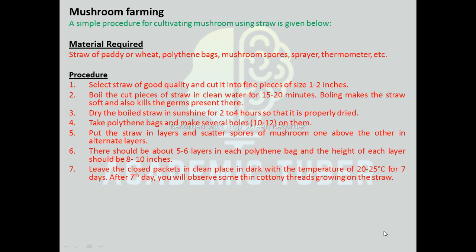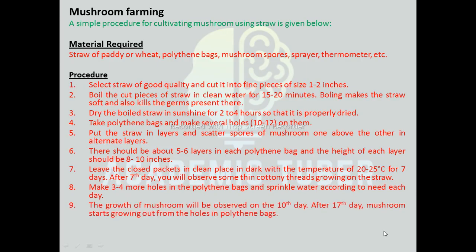Leave the polythene packets in a clean, dark place at a temperature of 20 to 25 degrees Celsius for 7 days. After the 7th day, you will observe some thin, cottony threads growing on the straw. Make 3 to 4 more holes in the polythene bags and sprinkle water as needed each day. The growth of mushroom will be observed on the 10th day. After the 17th day, mushrooms begin growing out from the holes in the polythene bags. The grown mushrooms will be ready for harvesting after 25 days.